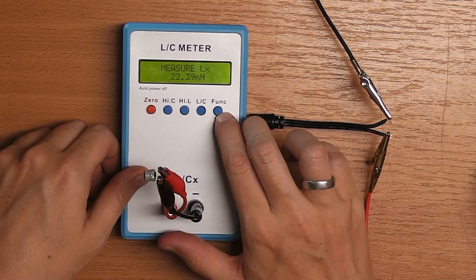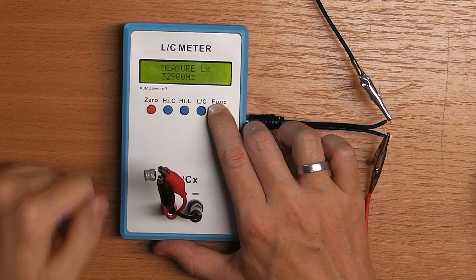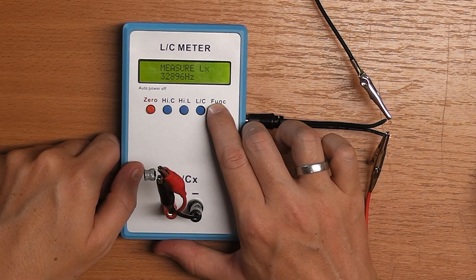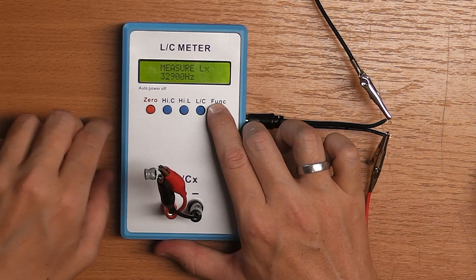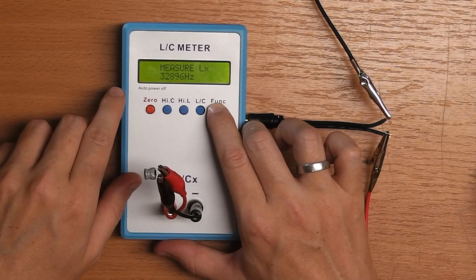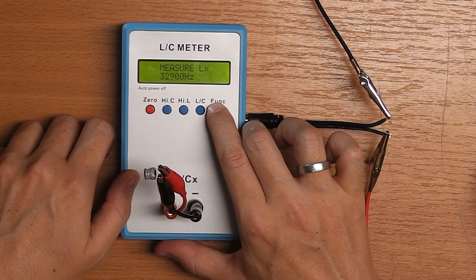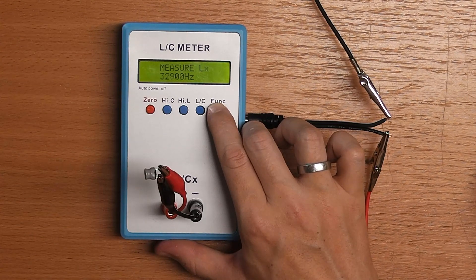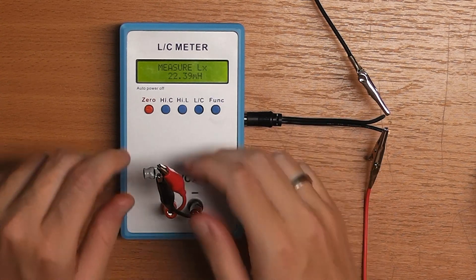One thing that you can see, there is this funk button here. If I press that, it will show me a frequency. So what I'm guessing is that internally, the L is in parallel to a known capacitance as generating an oscillation. And this oscillation is then measured and converted to a capacitance or corresponding inductivity, depending on what we are measuring right now. But we'll see that as soon as we take the meter apart.